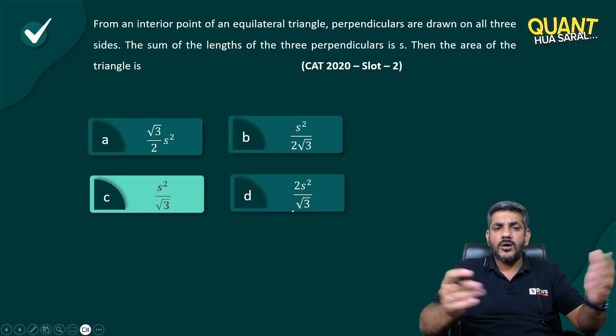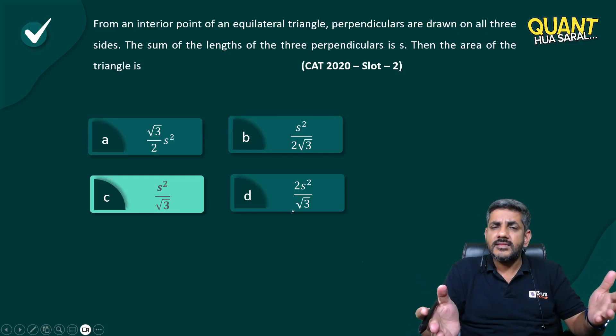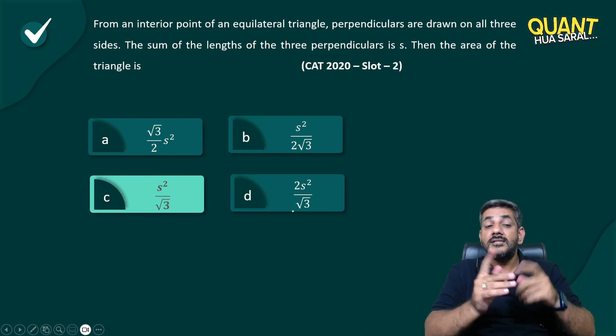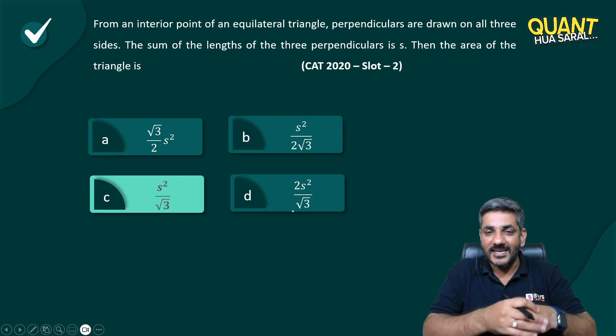And my answer is s square by root 3. That's it. Our job is done without doing anything. We just have to choose a point judiciously and that could have done your answer. This is what I call aptitude. Thank you.